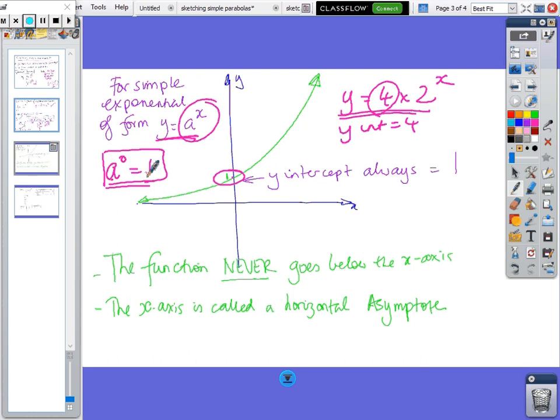And you'll also note that the function can never be negative for the standard one. It never goes below the x-axis. And so the x-axis is called the horizontal asymptote because the green line approaches the blue line but never actually touches it.